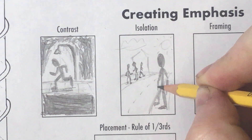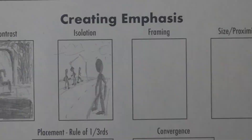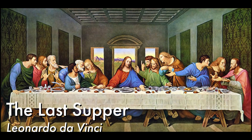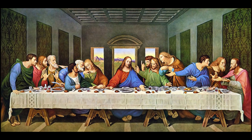Moving along to the third box — framing. Let's take a look at Leonardo da Vinci's The Last Supper. There is a lot happening in this picture, but notice how Jesus in the middle is framed by the window behind him. This is the last supper Jesus ate with his disciples before he went to die on the cross — an important historical event. That window frame behind him almost puts him in a separate picture.